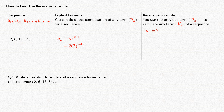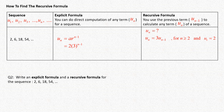Term number 2 is term number 1 times 3, and term number 4 is term number 3 times 3. From this we can write out the recursive formula. Don't forget the condition for the value of n and the value of the first term. You can also give your answer in the form of the relation between u(n+1) and u(n).